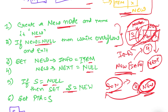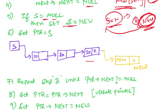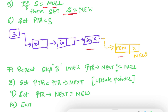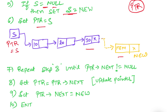Now there can be a case when I have a whole linked list already there and I have to do addition of the new node at the end. For this, first we will create a new variable called 'ptr' — pointer. The pointer will be tracking our current location. First, what we will do is set this pointer equal to s.